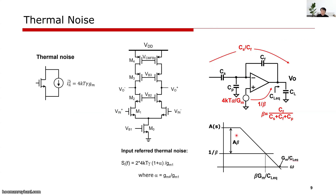For high-resolution ADC design, residue amplifier noise analysis is needed. Beginning from the device noise, we can find the input-referred noise of the op-amp. Once we find the input-referred op-amp noise, by referring it to the input signal side, we can find the entire noise limitation of the closed-loop amplifier.